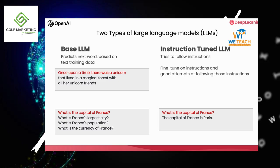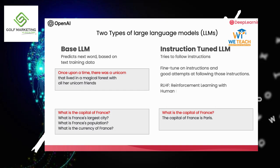The way that instruction-tuned LLMs are typically trained is you start off with a base LLM that's been trained on a huge amount of text data, and further train it — fine-tune it — with inputs and outputs that are instructions and good attempts to follow those instructions. And then often further refine using a technique called RLHF, reinforcement learning from human feedback, to make the system better able to be helpful and follow instructions.